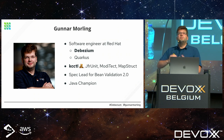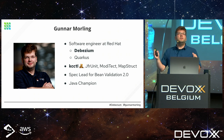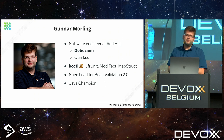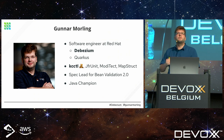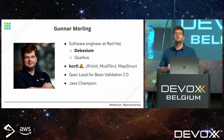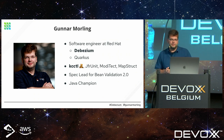I am Gunnar Molling. I work as a software engineer at Red Hat. I'm mostly involved with Debezium, which is a project for change data capture — I'll get to what that is in a bit. I've contributed a little to Quarkus and built a command line tool for Kafka Connect called KC Cuddle. I did a demo about this yesterday, so if you missed that, you can watch the recording on the DevOps YouTube channel.